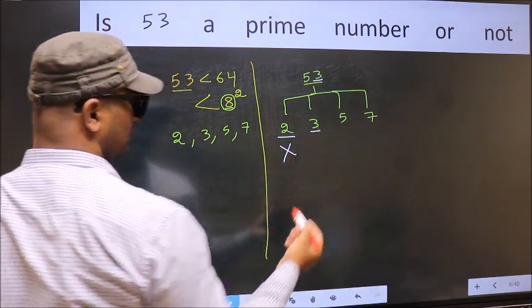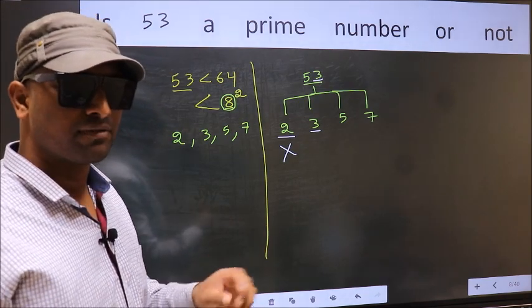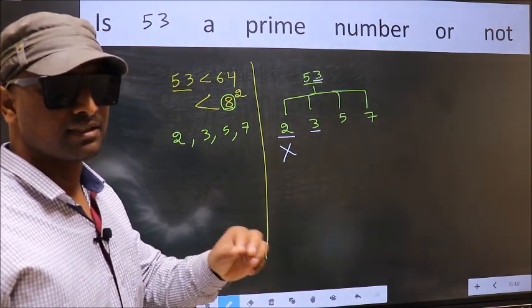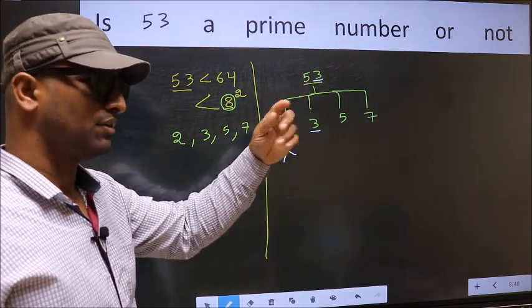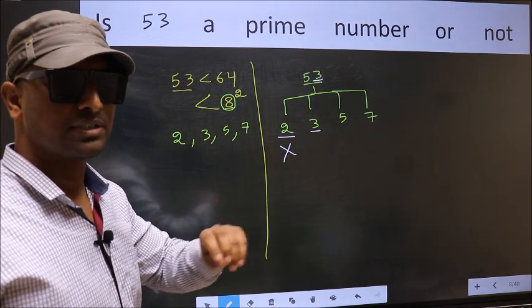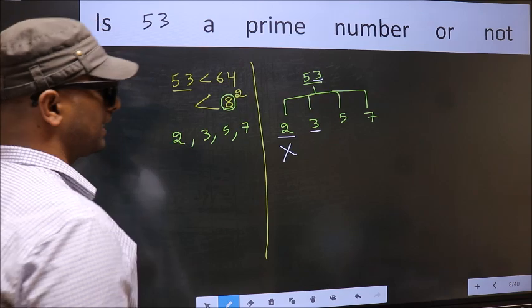Next, number 3. To check divisibility by 3, we should add the digits. What I mean is 5 plus 3, we get 8, and 8 is not divisible by 3. So, this number is also not divisible by 3.